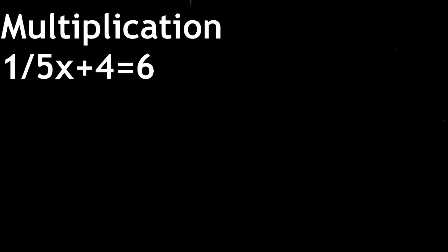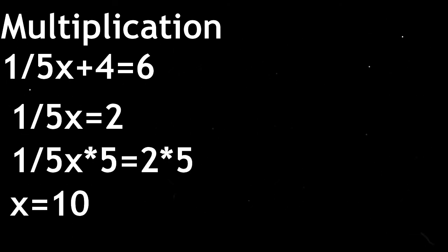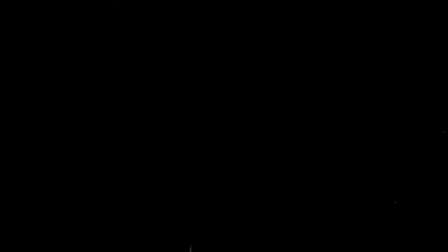Multiplication, 1 fifth x plus 4 equals 6. And you multiply the rest, first you gotta subtract. No matter the occasion, then multiply by 5 on both sides of the equation. Last is division,